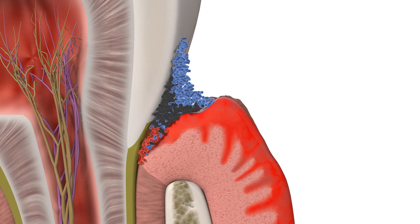the destruction of the tooth's supporting tissues can be substantial, including the bone. A new vaccine, being developed at the University of Melbourne with commercial partner CSL,